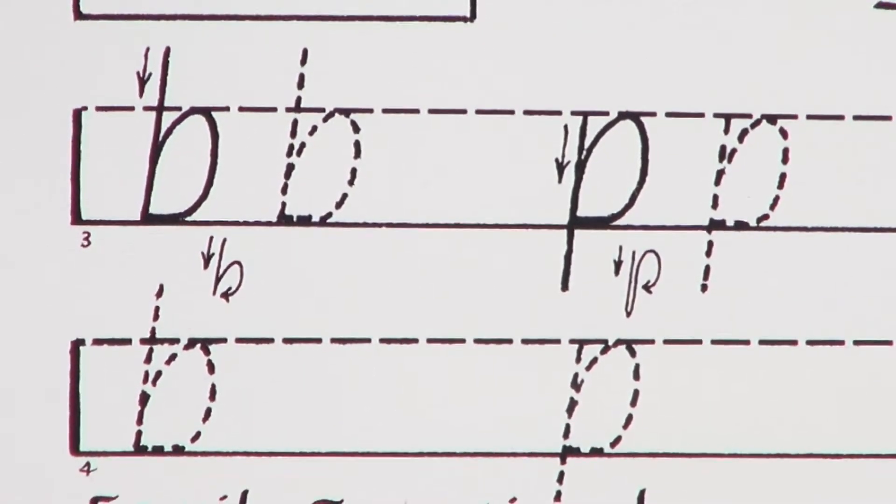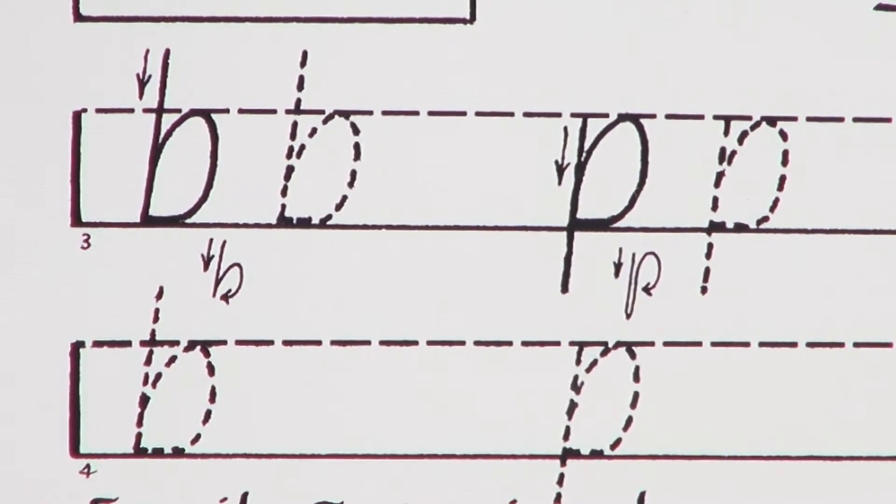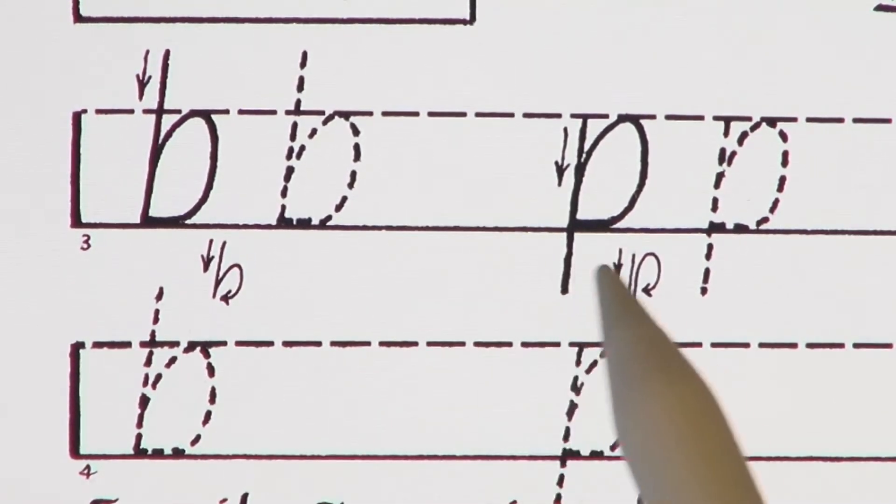Today I'm using the Getty Dubé app to practice the lowercase b. B is a member of the family of italic lowercase letters that contain the inverted italic A shape. That family also includes the letter P.